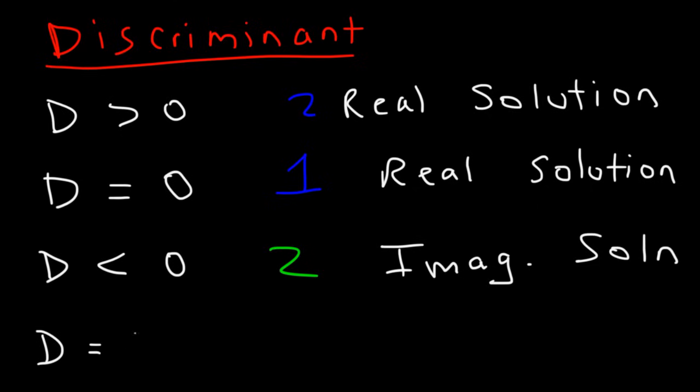The discriminant formula is b squared minus 4ac for a quadratic equation in standard form, ax squared plus bx plus c.